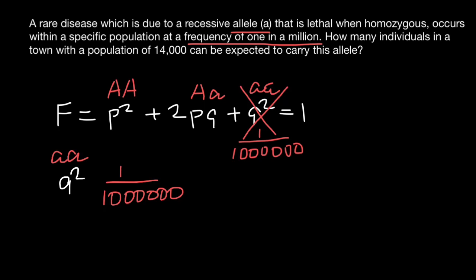That means q equals the square root of 1/1,000,000. What number multiplied by itself gives one million? It must be one thousand. So q = 1/1,000.